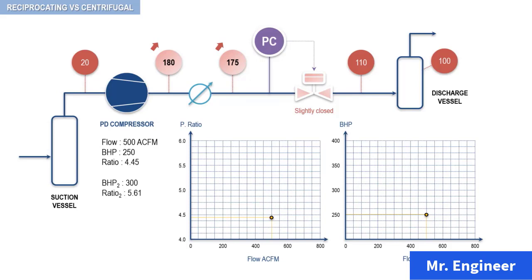This new ratio is equal to 5.61. Now, let's plot these two points on the two graphs: the new pressure ratio as a function of the flow, and the new brake horsepower as a function of the actual flow. Notice here that both the pressure ratio and brake horsepower curves are essentially a vertical line.